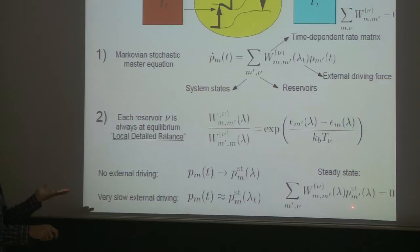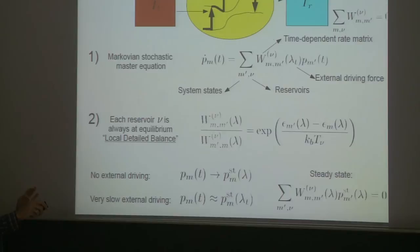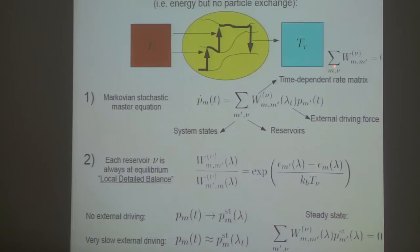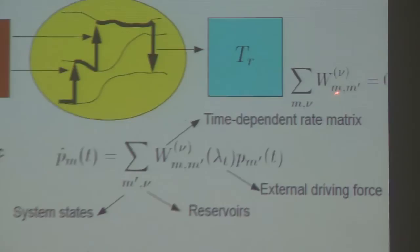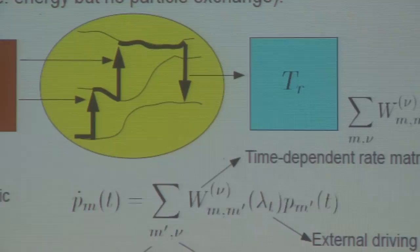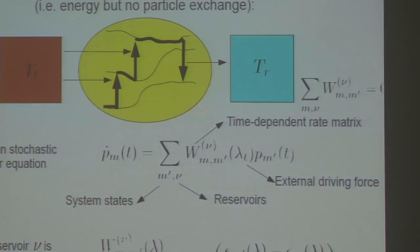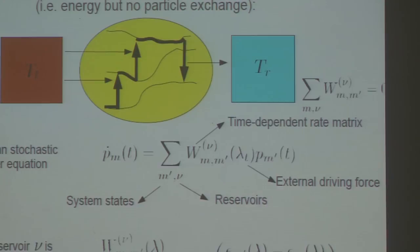Steady state is defined simply by p-dot equals zero — no evolution of the probability. A stationary state means the probability doesn't evolve; it's time-independent. A key property of a rate matrix: if you sum over the first index M and over the bath index nu, you get zero. This is because if I sum over M, I'm summing up the change in probability. Since total probability has to be one, the change will be zero. This is a consequence leading to probability conservation — a central property of the rate matrix.